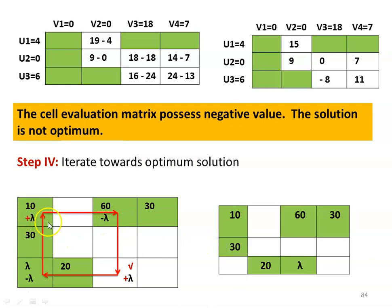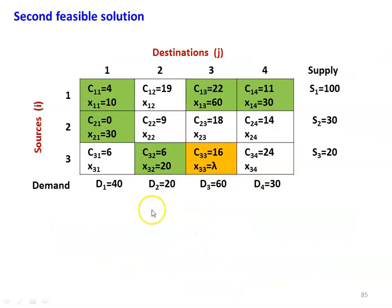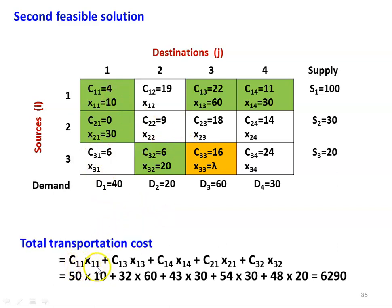The new (second) allocation is: X11=10, X13=60, X14=30, X21=30 (no change), X32=20, and X33=lambda becomes the new allocation. The second feasible solution cost: 50×10 + 32×60 + 43×30 + 54×30 + 48×20 = Rs. 6,200.